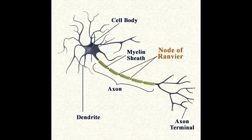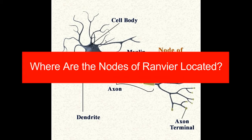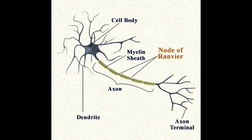Where are the nodes of Ranvier located? A neuron is made up of a soma, dendrites, nucleus, axon, and terminals. The axon is coated with layers of myelin, a fatty substance that insulates the neuron from electrically charged atoms and molecules. However, the axon stays uninsulated at equidistant points, which are referred to as nodes of Ranvier.